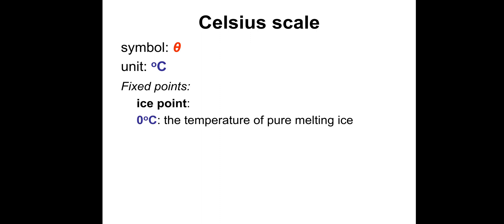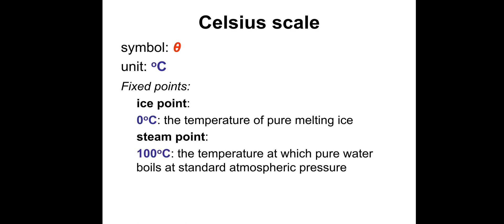Some fixed points on the Celsius scale which you'll be aware of. Ice point: zero degrees Celsius, the temperature of pure melting ice. Steam point: 100 degrees Celsius, the temperature at which pure water boils at standard atmospheric pressure. Standard atmospheric pressure is approximately 101 kilopascals.